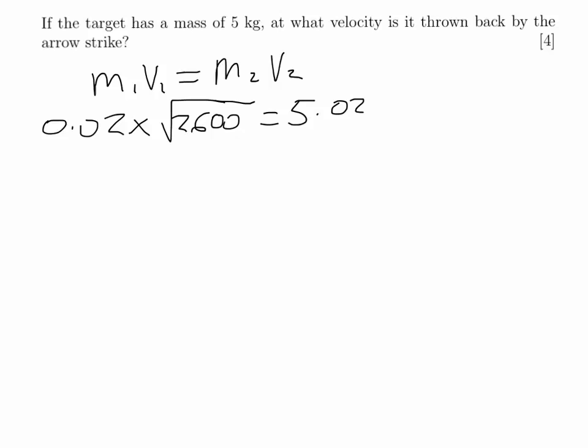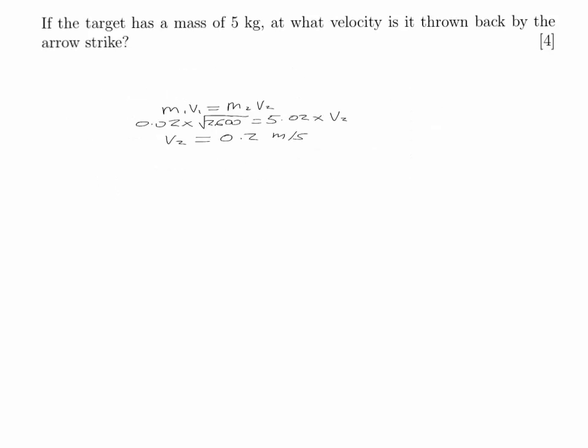So when the arrow strikes the target, it sticks in the target, so what we've got here is the combined mass of the arrow and the target, and we're looking for our velocity of them both afterwards. So we can solve for V2 to give 0.02 meters per second.